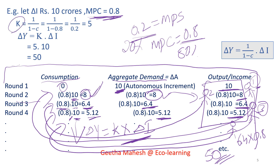The total income will sum to 50 crores because the marginal propensity to consume is high here. The multiplier value is five: 1 divided by (1 minus 0.8) = 1 divided by 0.2 = 5. In the previous example with MPC = 0.5, the multiplier was only 2. Now with MPC = 0.8: multiplier is 5, investment is 10 crores, so 5 × 10 = 50 crores. As MPC increases, the effect of the multiplier also increases. If MPC is less, the effect of the multiplier is also less.